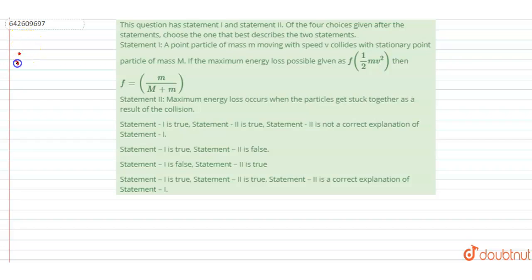So let's see. This is the point particle small m, and it strikes with a point particle capital M. Maximum energy loss will be when the collision is perfectly inelastic. What will happen? Both will start moving with common velocity. Both will stick and start moving with a common velocity, let's suppose v dash.